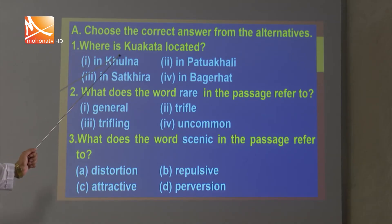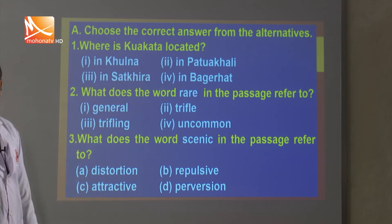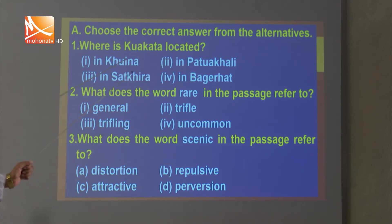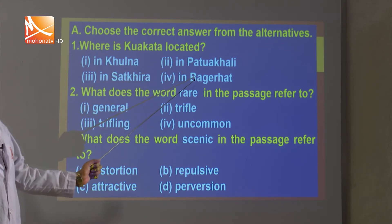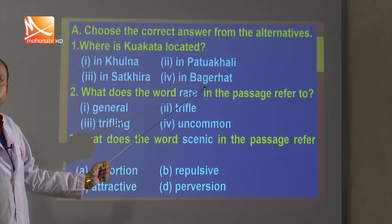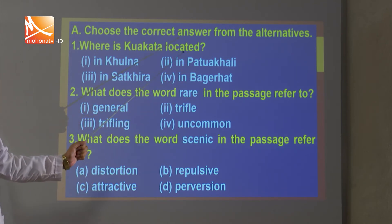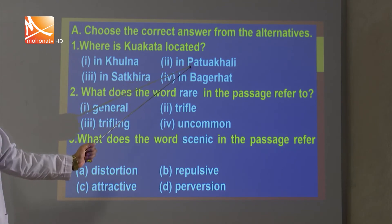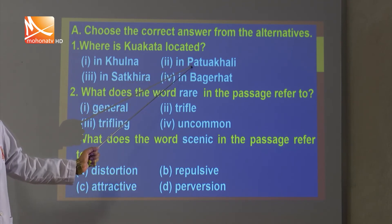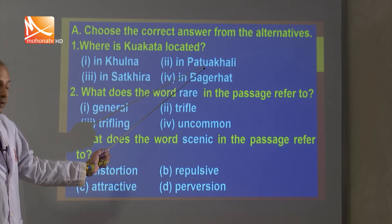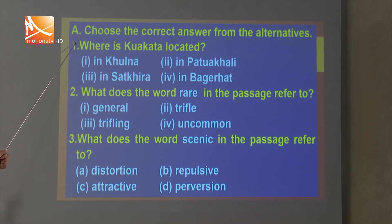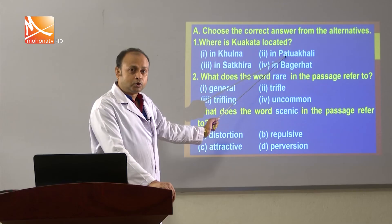First question: Where is Kua Kata located? The options are Khulna, Patuakhali, Shatkhira, or Bhola. We learn from the passage that it is located in Patuakhali. So number 2 — Patuakhali — is the correct option. We have to write: question 1, option 2, in Patuakhali.